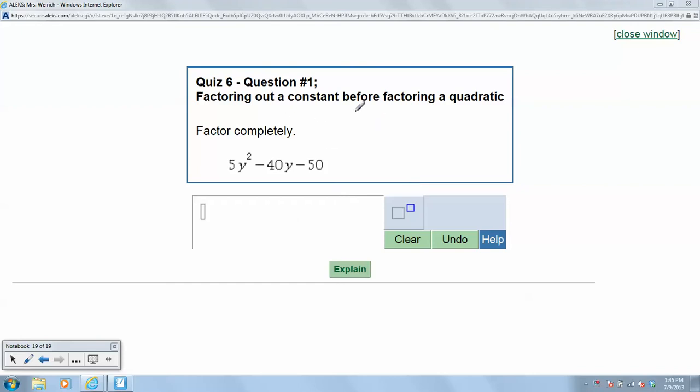This topic is called factoring out a constant before factoring a quadratic, and factor completely is the only direction given to us.